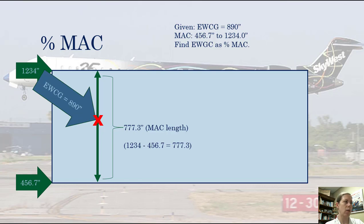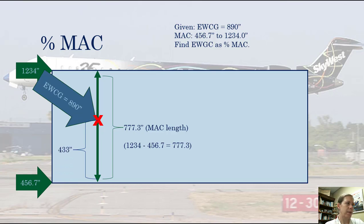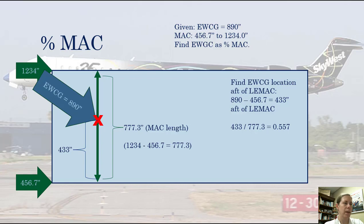To do that I need to know how far it is from the empty weight center of gravity to the leading edge of the mean aerodynamic chord — our LEMAC. We subtract 456.7 from 890 and get 433.3 inches aft of the leading edge of the MAC. Then I take that 433.3 inches divided by the total MAC length of 777.3 and get 0.557.